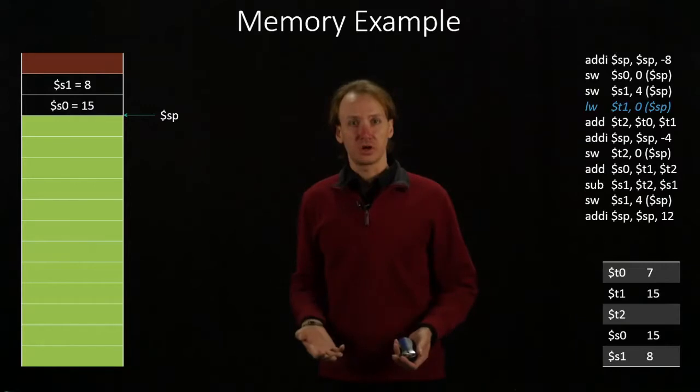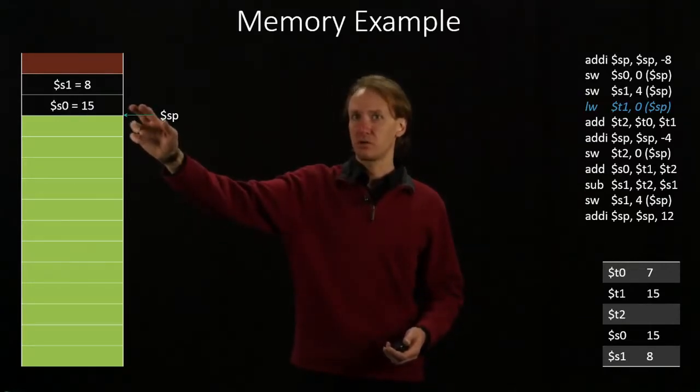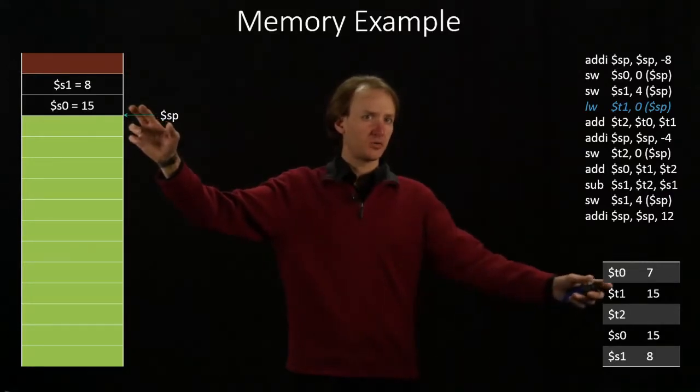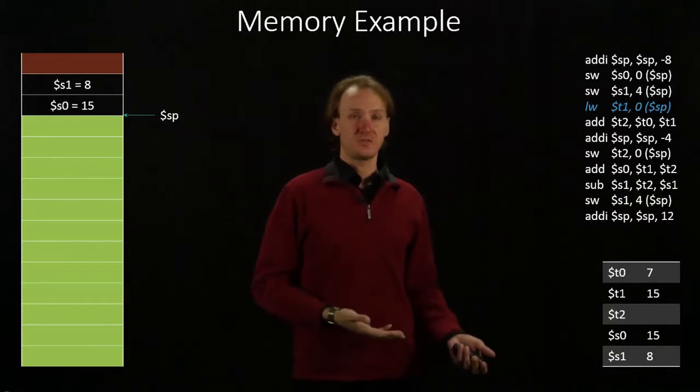Next I have a load word instruction. The load word instruction says go to stack pointer plus 0, copy that data out, and put it over in T1. So now I have 15 as the value of T1.